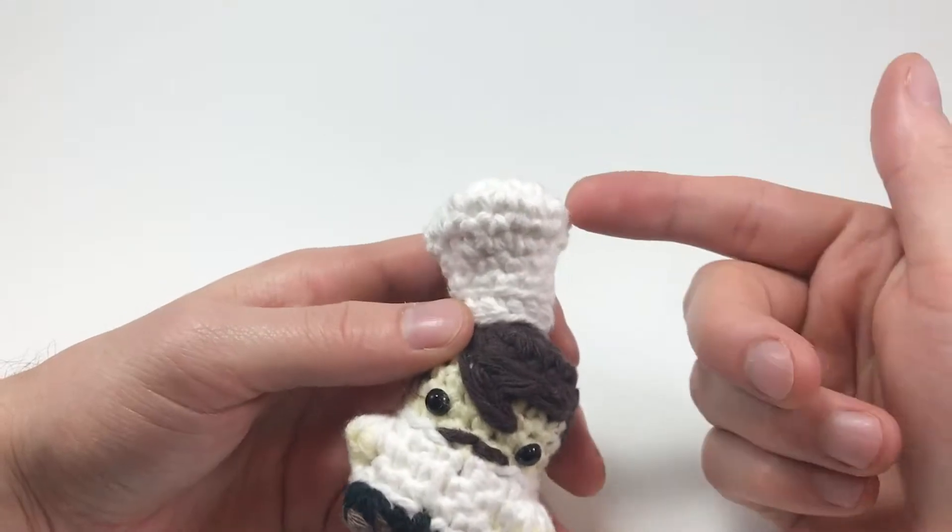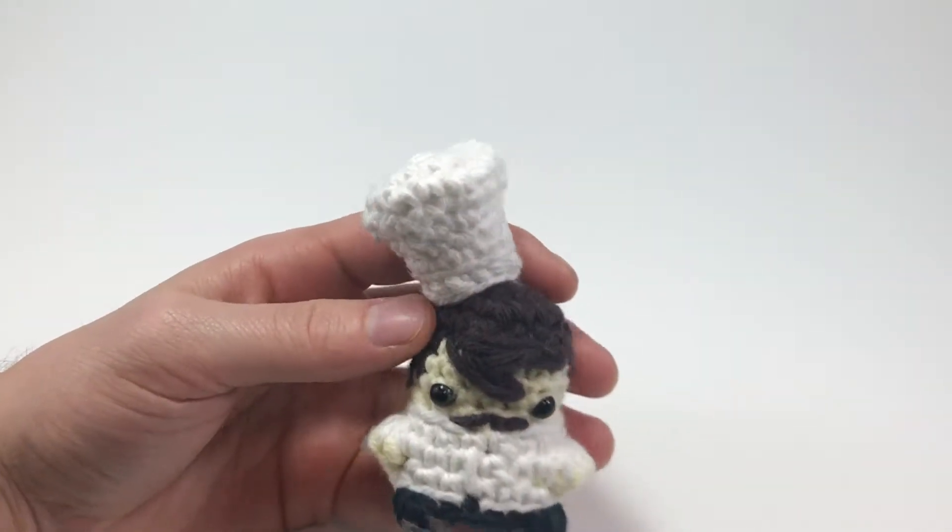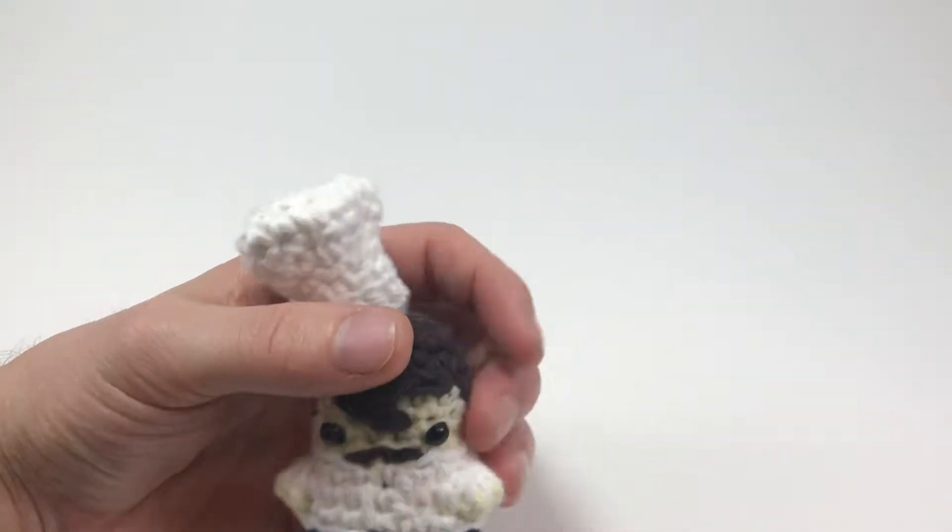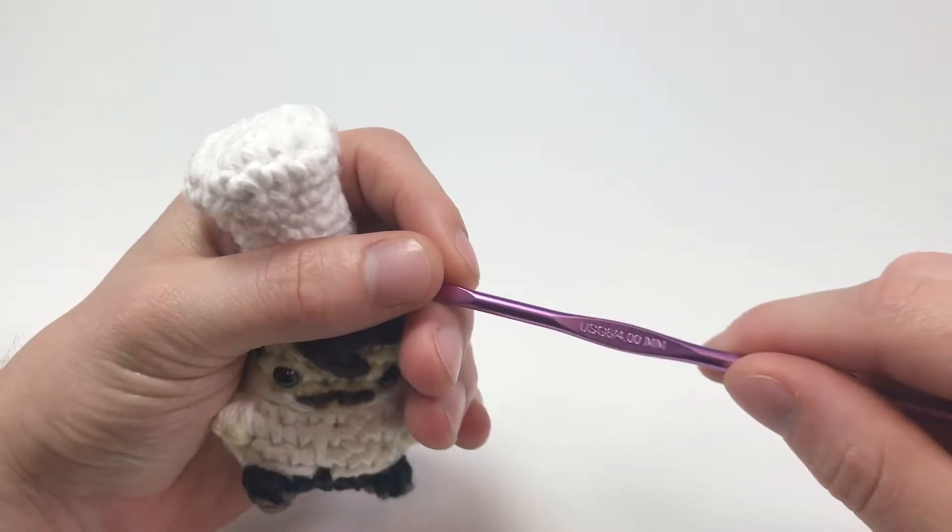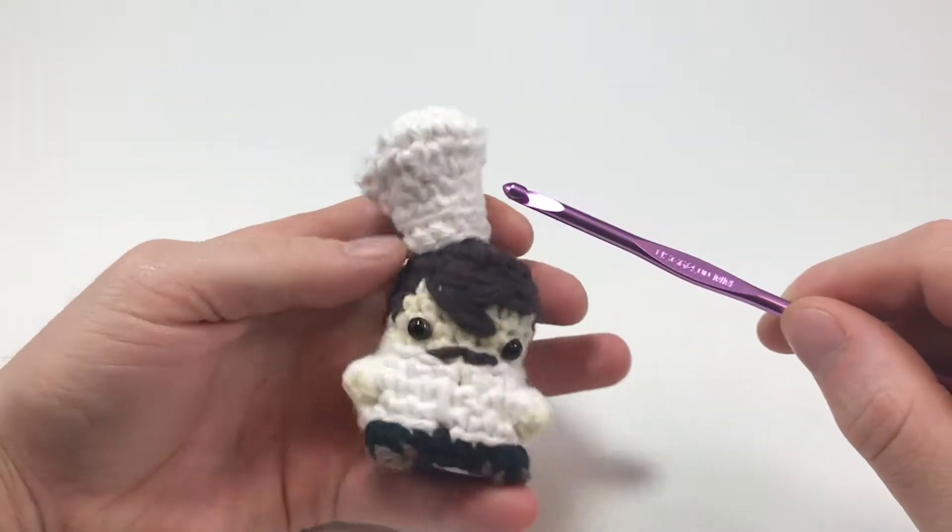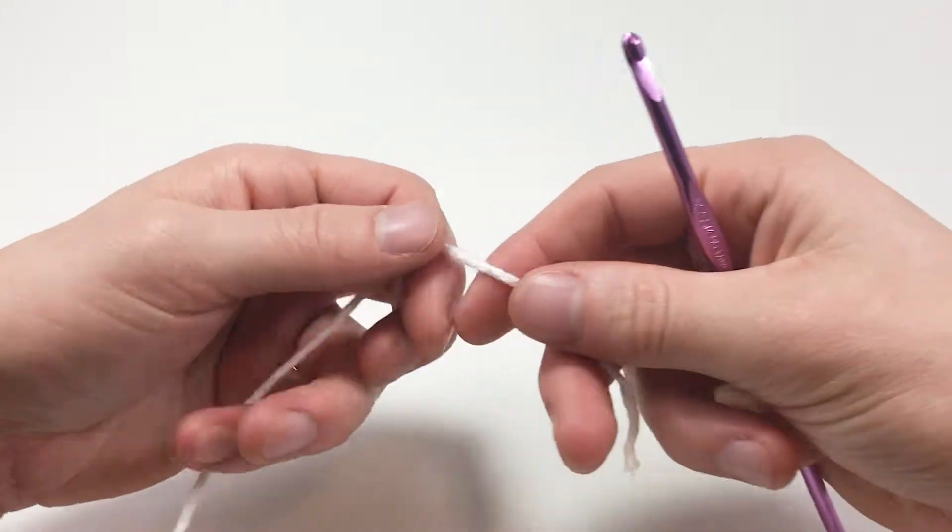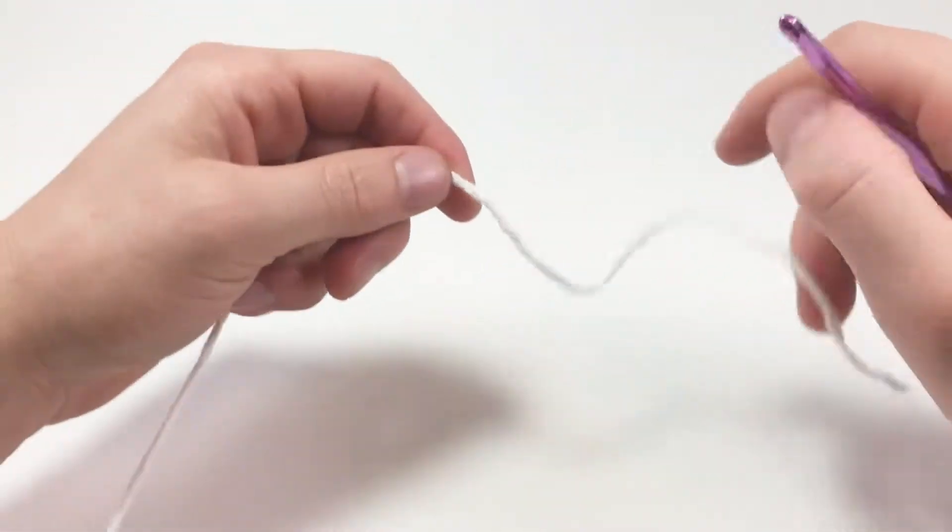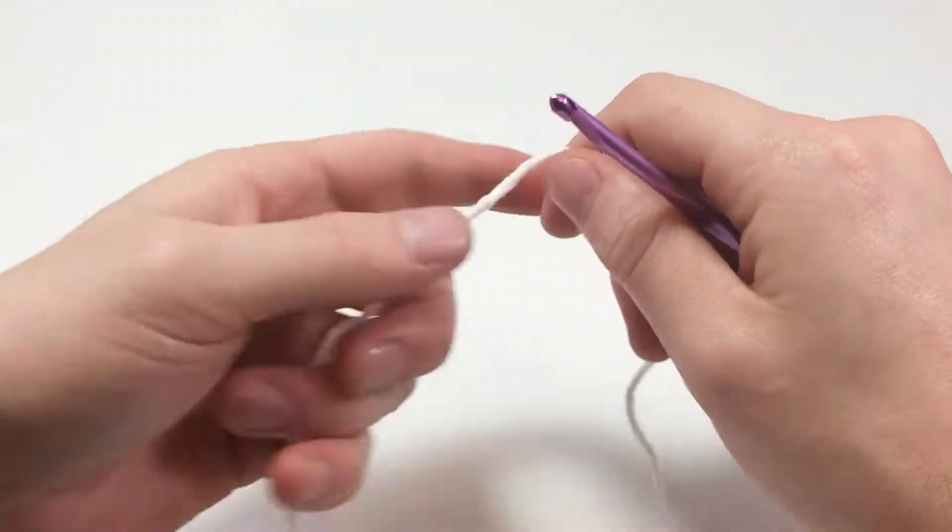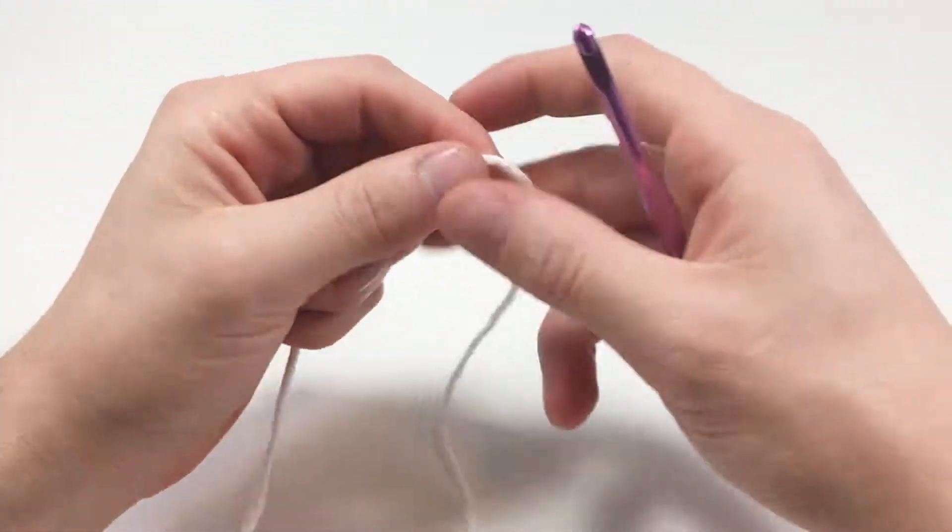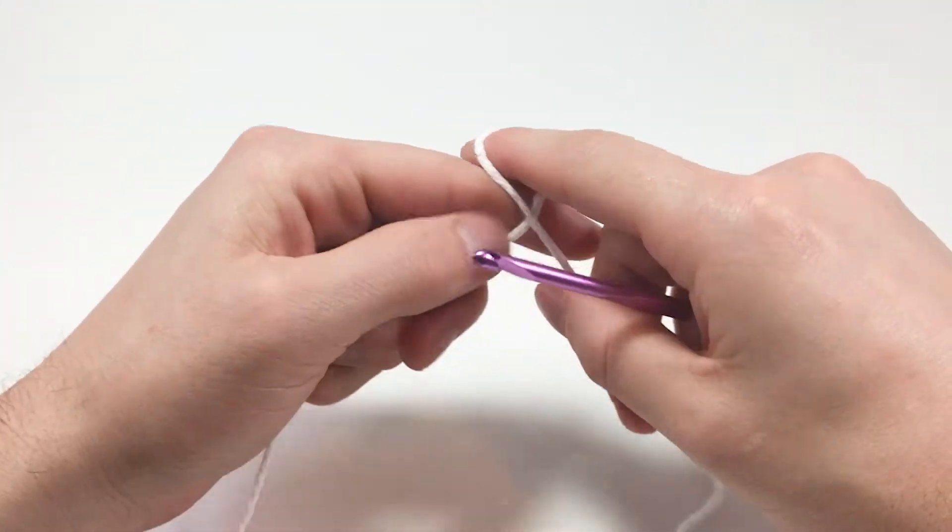All you'll need for this is white yarn. I'm using worsted weight yarn and a size G, 4mm crochet hook. Alright, let's get hooking. Starting with our worsted weight white yarn, you want to either use the magic loop method here, or you can use the chain two method, which is what I'll be doing.